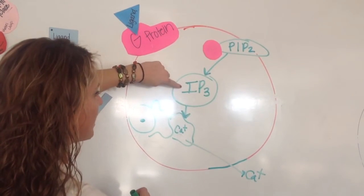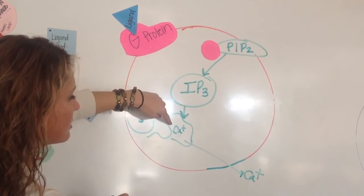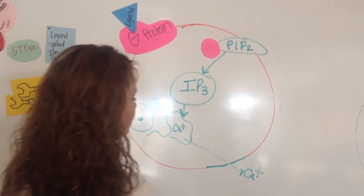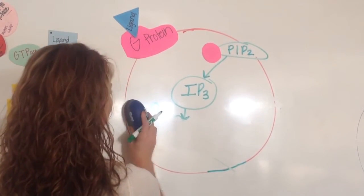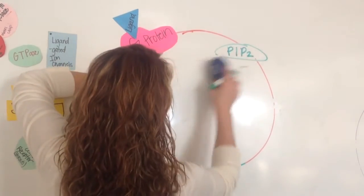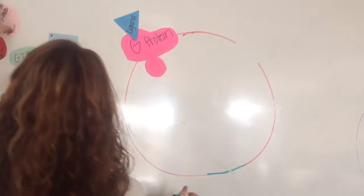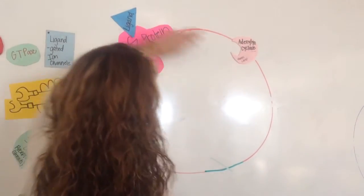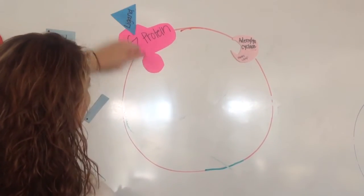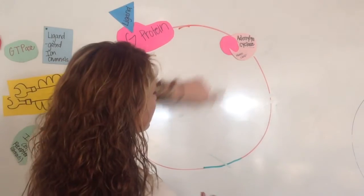It moves around in the cytoplasm, and it tells the smooth ER to release the calcium. The second secondary messenger that you need to know is cAMP. So when the ligand binds, G-protein attaches to adenylyl cyclase.